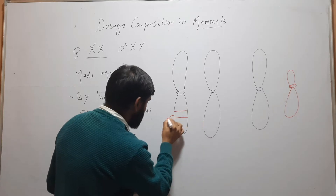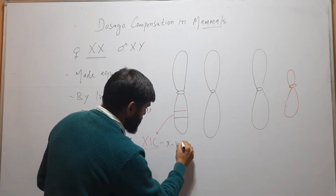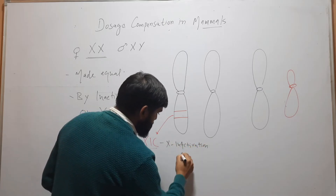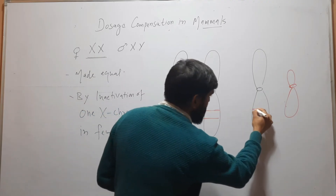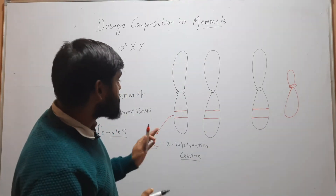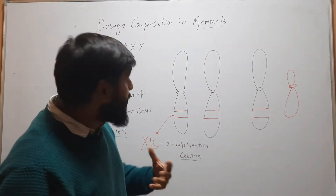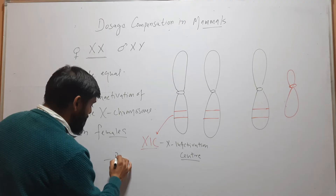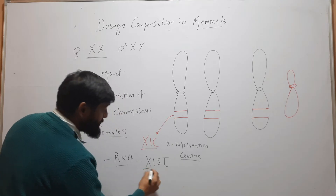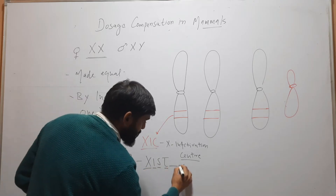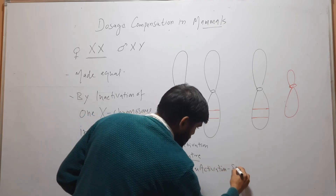There is a specific site on the X chromosome called the X Inactivation Center, or XIC. All X chromosomes — in both females and males — have this XIC. In the chromosome that is destined to become inactive, this XIC will express itself.